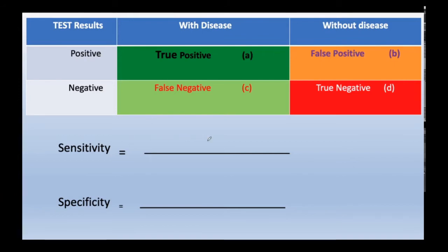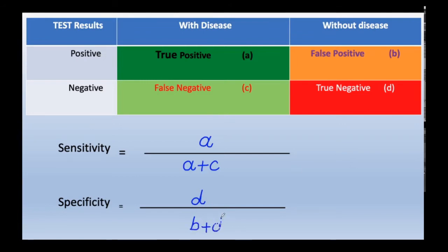For sensitivity estimation, we divide true positive individuals — labeled as A — by the total number of positives declared by the test, which is A plus C. These give us the sensitivity value. For specificity, we divide the truly negative individuals by the total negatives, which includes false positives (wrongly called positive) and true negatives. So B plus D is the denominator for specificity, and A plus C is the denominator for sensitivity.